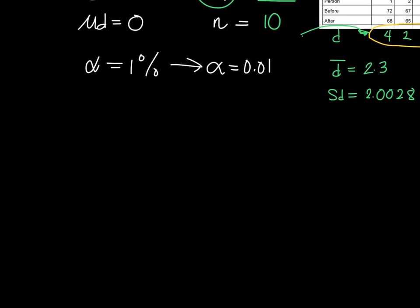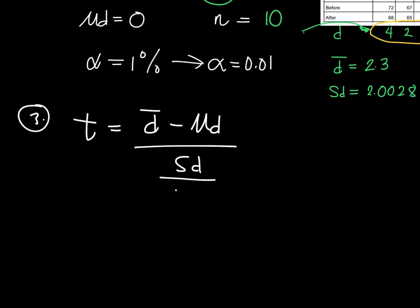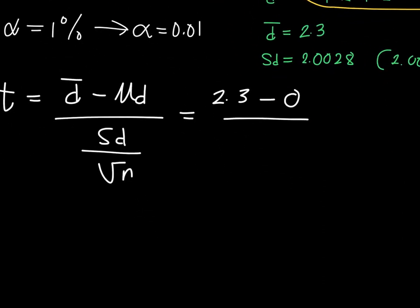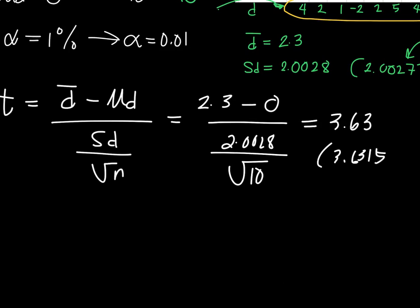Step three is where we calculate the exact value of t. The formula gives us: t equals d-bar minus mu-d, all over sd over the square root of n. Substituting: d-bar is 2.3, mu-d is 0, sd is 2.0028, and n is 10. Using a calculator, the computed value is 3.63 (from 3.6315). Take note of this number as we will compare it with the value from the t-table.